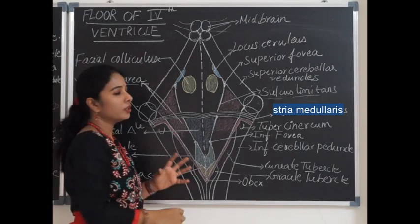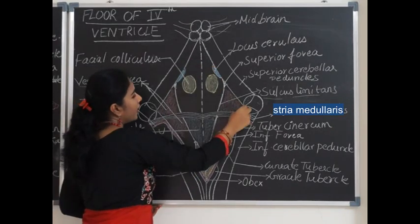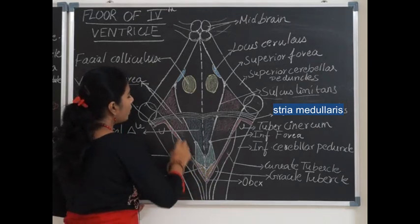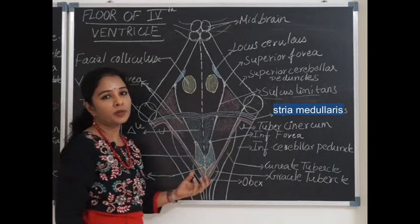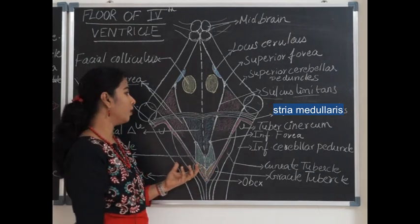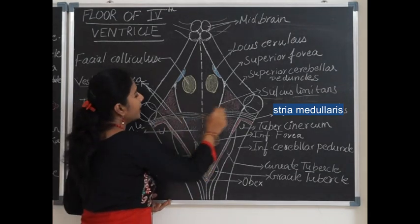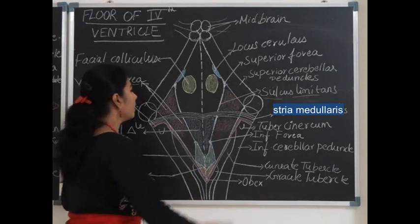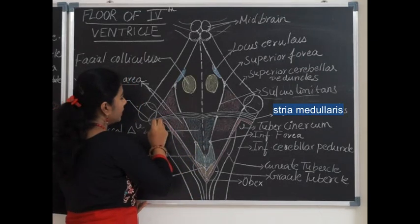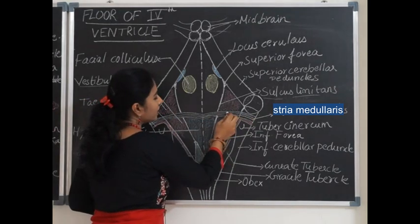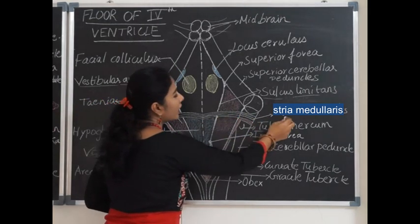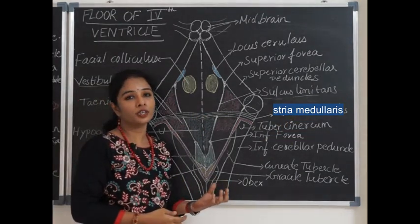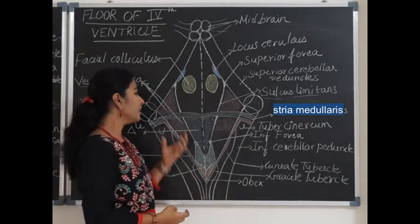The floor of the fourth ventricle is divided into three parts: the upper triangular part formed by the dorsal surface of the pons, the lower triangular part formed by the open dorsal part of the medulla oblongata, and the intermediate part formed by the dorsal part of the pontomedullary junction. The intermediate part is identified by faint striae — fibers arising from the accessory cuneate nucleus of the medulla.